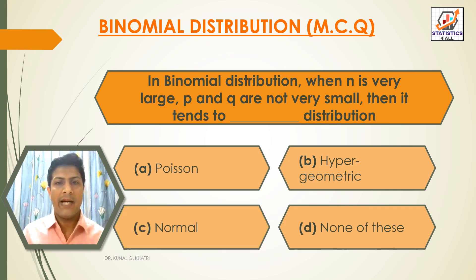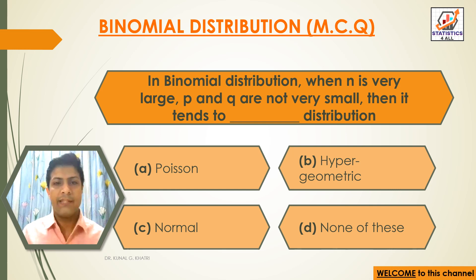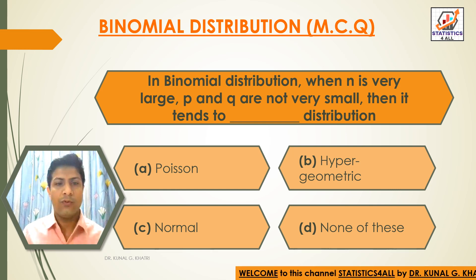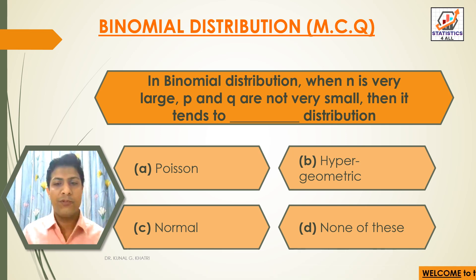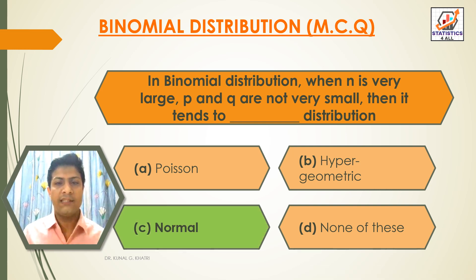Next question: In binomial distribution, when n is very large and p and q are not very small, then it tends to dash distribution. Option A: Poisson. Option B: Hyper geometric. Option C: Normal. Option D: None of these. The answer is option C — Normal distribution.